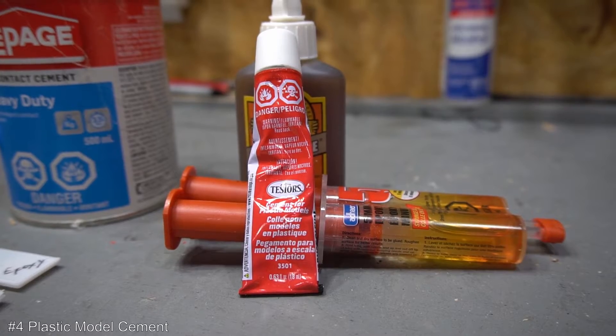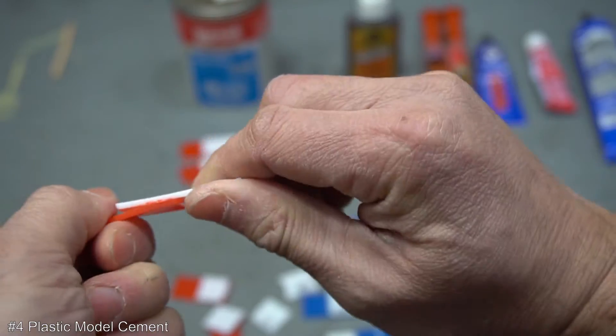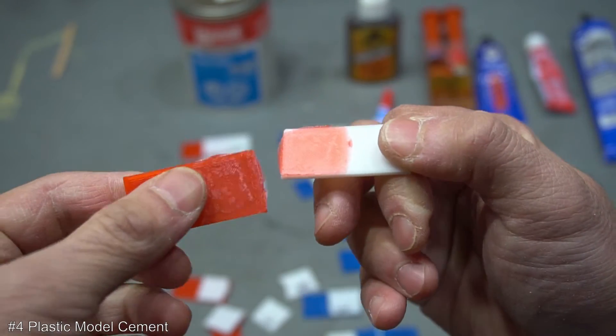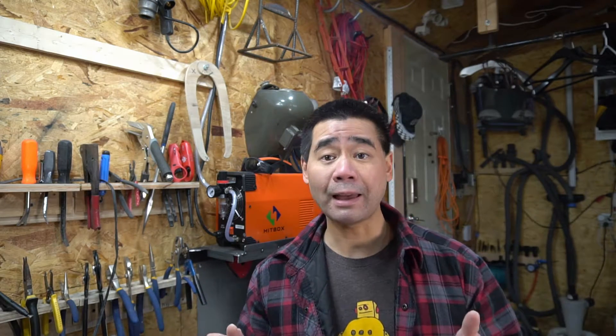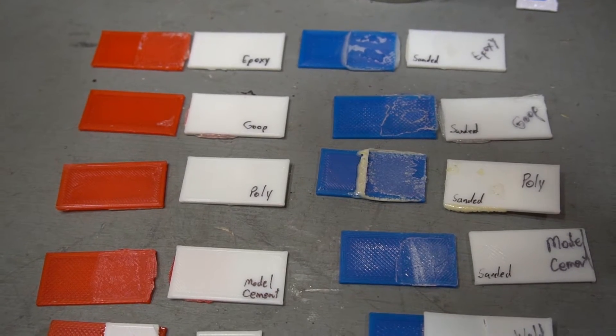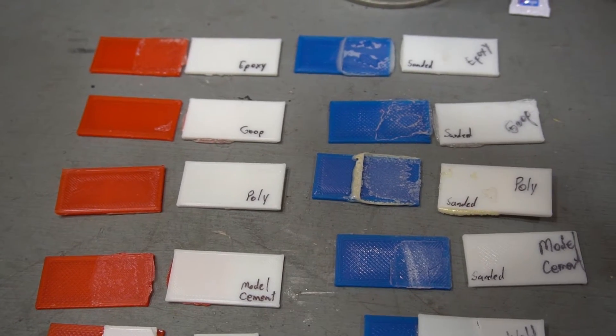So that means coming in at number four is the plastic model cement. This broke apart almost as easy as the goop, but it did melt the PLA a little bit. So I think it would hold a bit better than the goop. So far, I would not use any of those glues for PLA, as they all failed catastrophically with mostly clean breaks.